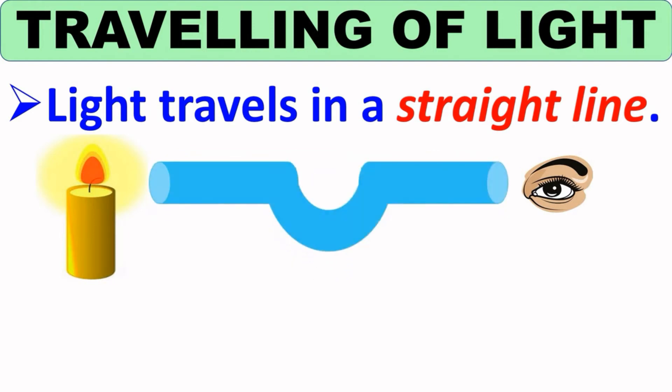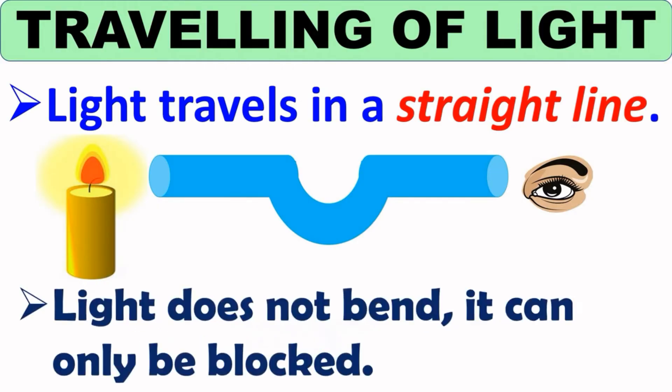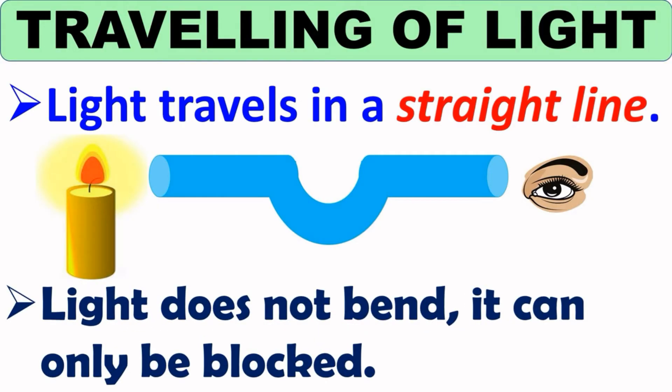take a curved pipe. And now, look through this curved pipe. Do you see light at the other end? No, you would not see any light at the other end of the tube. Why? It is because light travels in a straight line and light does not bend. It can be blocked.